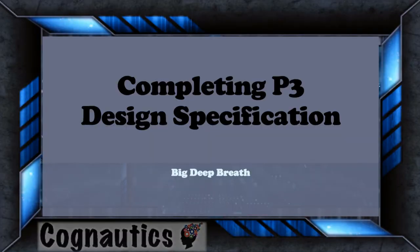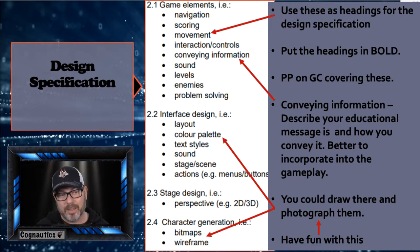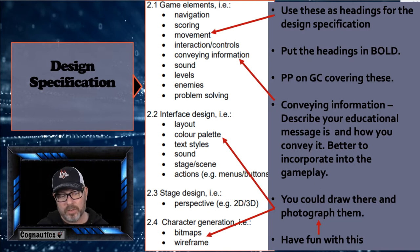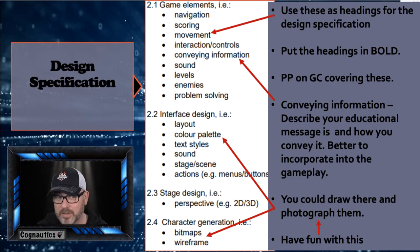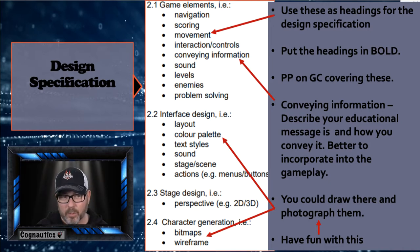Now we move on to the second part of P3, which is the design specification itself. This is about the game that you're going to actually make and all the documentation and paperwork that you need to produce. This comes from the teaching materials and is actually very useful because it gives you a really good list of what needs to be included. It looks like a massive list, but the good news is you'll recognize all of these from either P1 or from some of the tasks you've done for Unit 6.